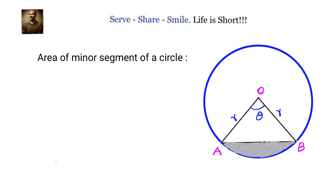Now, what is the area of the minor segment of a circle? In this figure you can see that this shaded area is the area of the minor segment of a circle, and that can be obtained by taking the area of the sector and from that subtracting the area of the triangle.